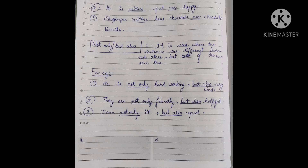Before the comma we have the first sentence: 'he is not only hardworking' - he's not just hardworking. Then after 'but also very kind' - that's another different sentence. Combined: he is not only hardworking but also very kind. He's not merely hardworking, he's also a very kind person. Second example: 'They are not only friendly but also helpful' - they're not just friendly, they're helpful too. Both facts are true.